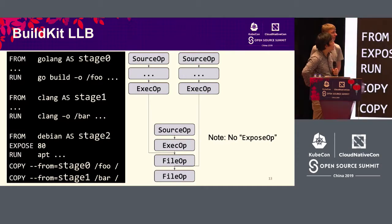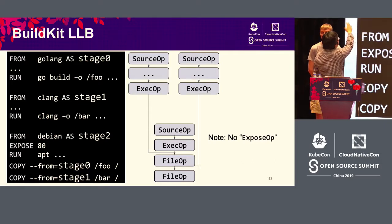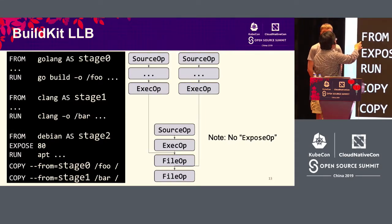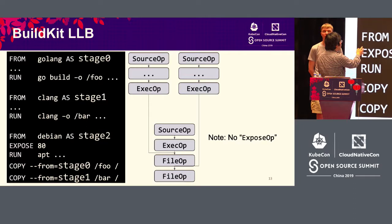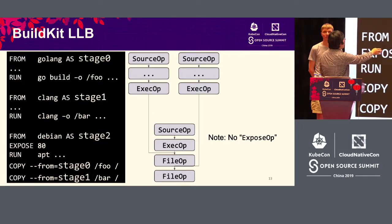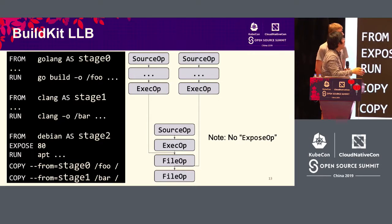Here is how LLB looks. We have a source op for FROM instructions, and we have an exec op for RUN instructions. LLB ops are very similar to Dockerfile instructions, but not always the same. For example, we don't have an LLB op for the EXPOSE instruction, because EXPOSE is just metadata — it's not a real instruction. And we have dependencies across file ops and stage 0 ops and stage 1 ops, so in this example we can execute stage 0 and stage 1 in parallel.